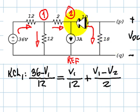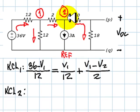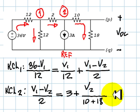And then we write the KCL equation for node 2, also with three currents, going in 3 amps, and V2 divided by 28 ohms.